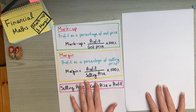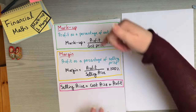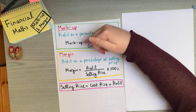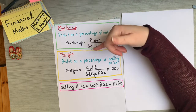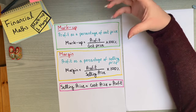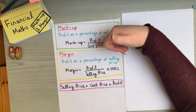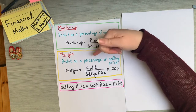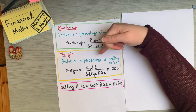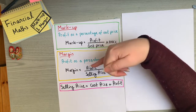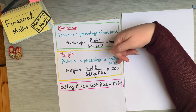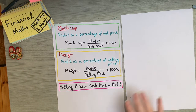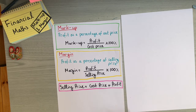We have two formulas. The markup is profit as a percentage of the cost price, written as: markup = (profit / cost price) × 100. Markup and margin are always expressed as percentages. The margin is profit as a percentage of the selling price, written as: margin = (profit / selling price) × 100. That multiplication by 100 is there to turn the result into a percentage.